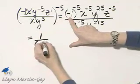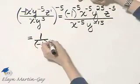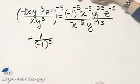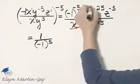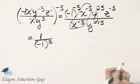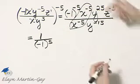same exact base, the base doesn't change, the power just becomes a positive power when I move it into the denominator. And now, notice I have some like bases, so I'm going to go ahead and use the quotient rule.